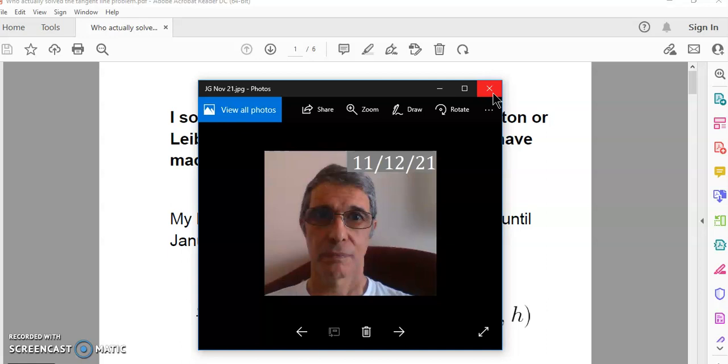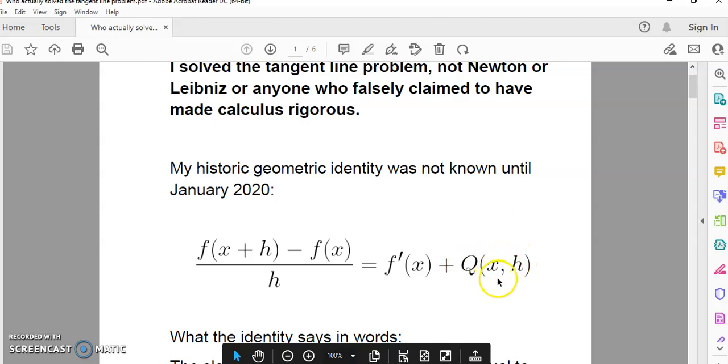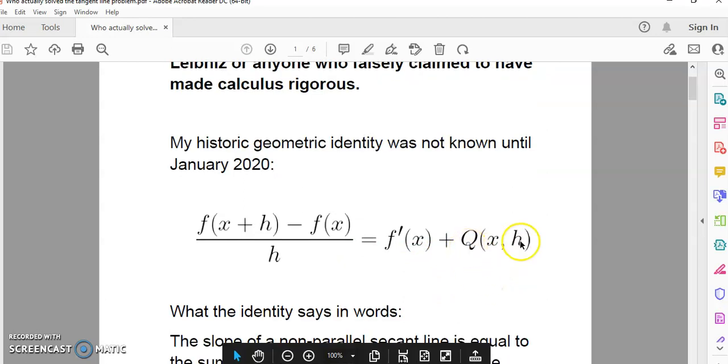The new calculus doesn't suffer from an extraneous term such as you see here in the identity. This term in the new calculus is always zero, whereas in the historic identity it cannot be zero unless f is a straight line. That's the only exception.